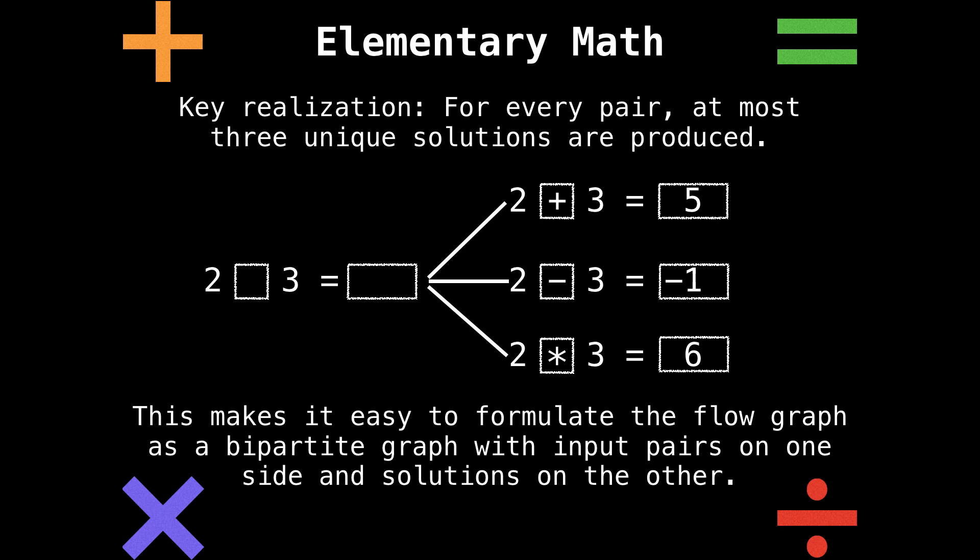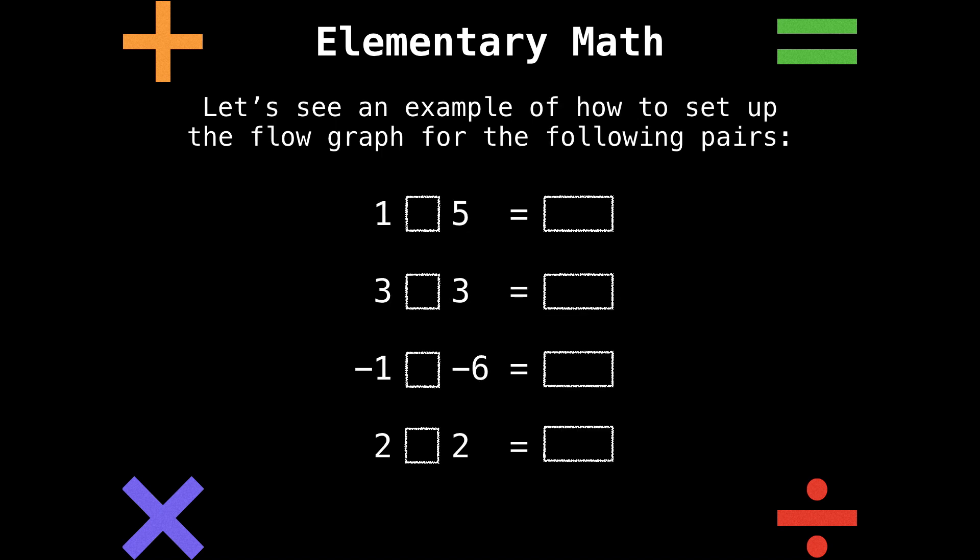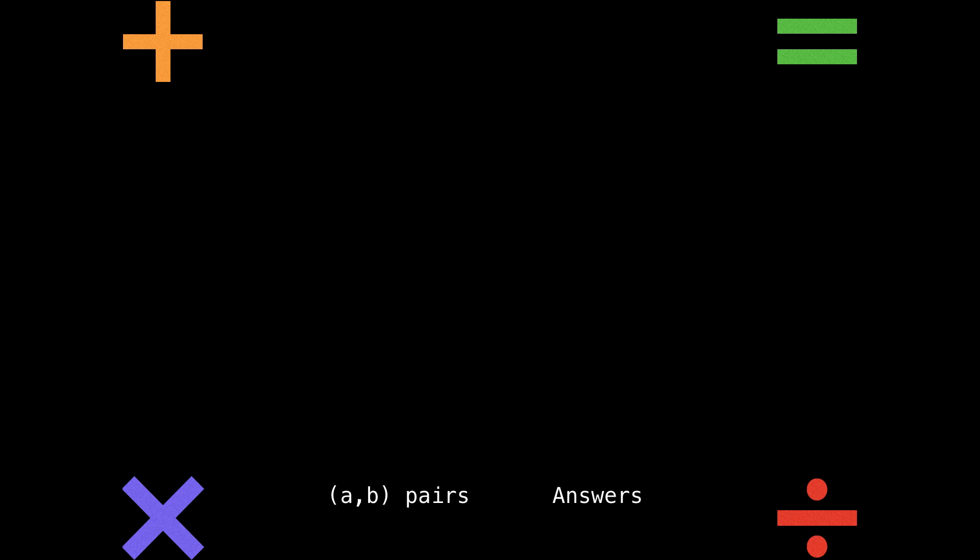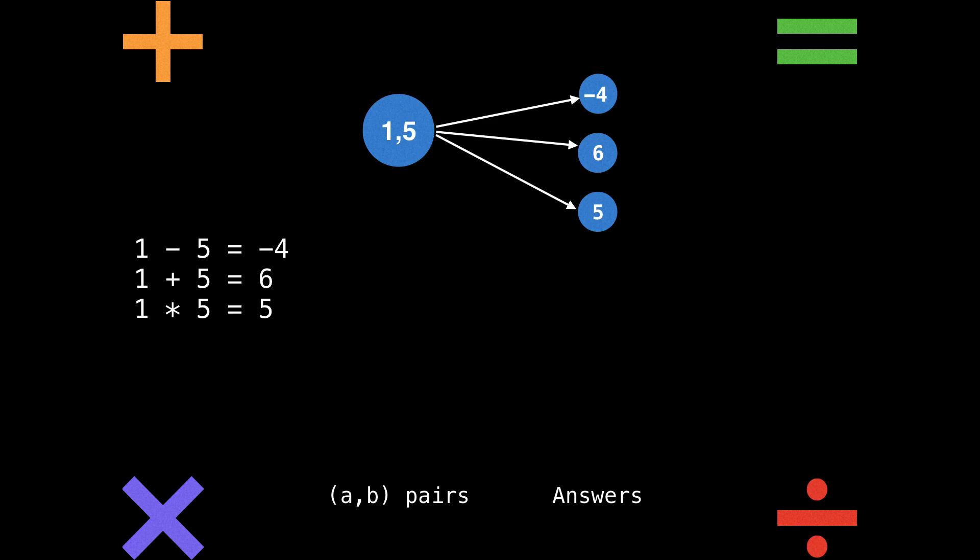Let's see if we can set up the flow graph and solve this set of input pairs. We have the pairs (1,5), (3,3), (-1,-6), and finally (2,2). So how we're going to set up this bipartite graph is we're going to have input nodes on the left side and answer nodes on the right side. For our first input pair (1,5), if we compute one minus five, one plus five, and one multiplied by five, we get -4, 6, and 5, which become answer nodes on the right-hand side. Then we want to attach an edge between that input pair and the answer. Do the same thing for the next input pair: make an input pair node and attach edges to the answer nodes.